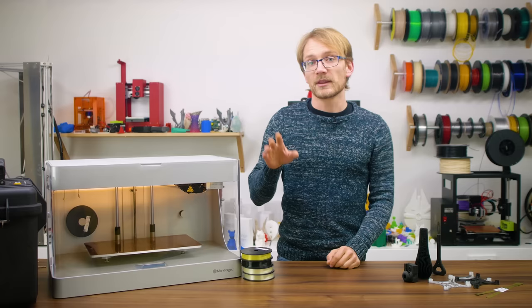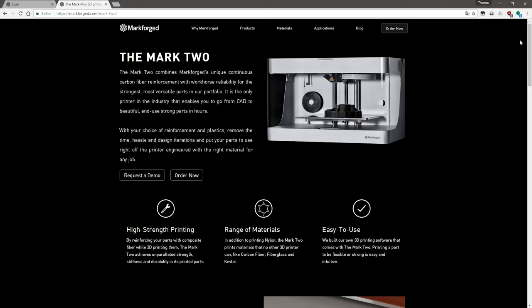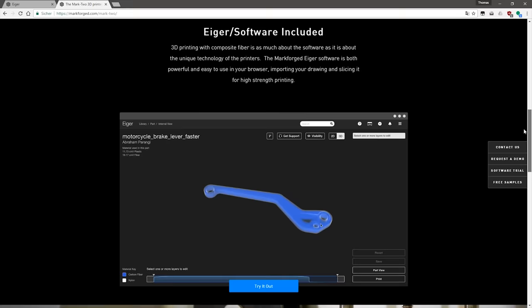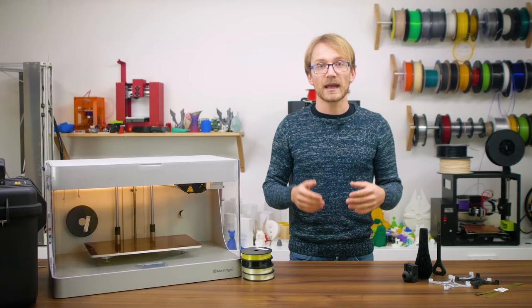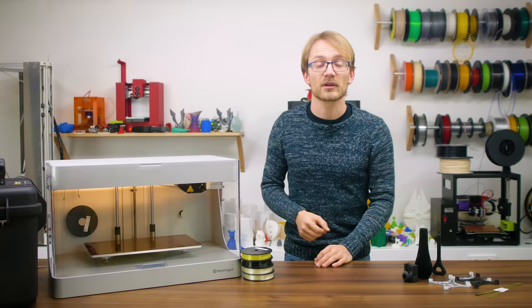This machine also has the option to print with plain nylon, which is more flexible and less abrasive than Onyx. For the price, you also get a ton of consumables, two spools of each fiber and a full spool of each base nylon. And that's exactly the machine that I have here from the German reseller, Mark 3D.